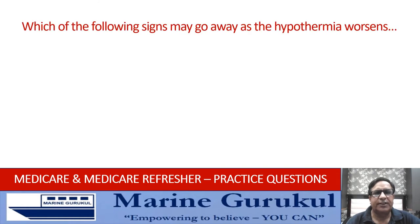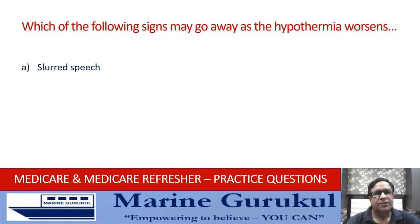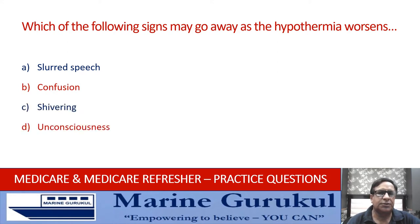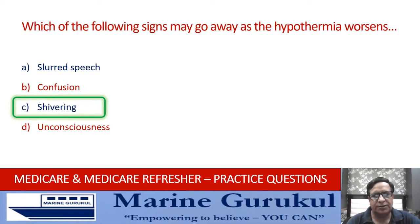Which of the following signs may go away as hypothermia worsens? Slurred speech; confusion; shivering; or unconsciousness. As hypothermia worsens, it's the shivering which may disappear. So the answer is C.